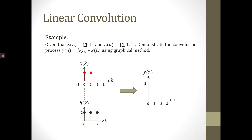This is an example of convolution given Xn, where at the origin it is equal to 1 and at n equal to 1 the value is 1. Also Hn, where at all values n=0, 1, and 2 the values are 1. Demonstrate the convolution process Yn equal to Hn convolution with Xn using the graphical method.